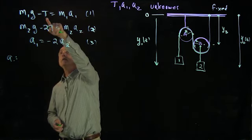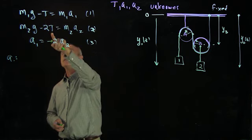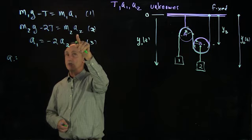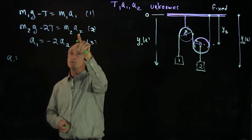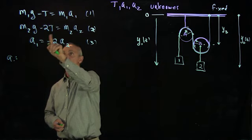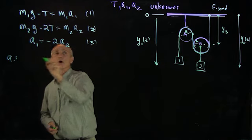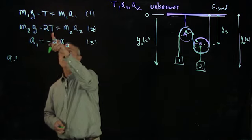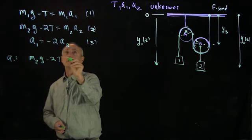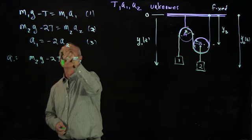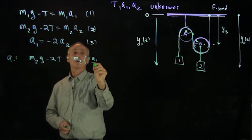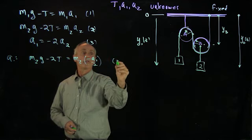And I have an unknown T, but in equation 2, that unknown T is appearing there, expressed in terms of a2. And a2 from equation 3 is expressed in terms of a1. So my first step is to rewrite equation 2 as m2g minus 2T equals m2, and here I'm going to make the substitution, which is minus a1 over 2. We'll call that equation 2a.